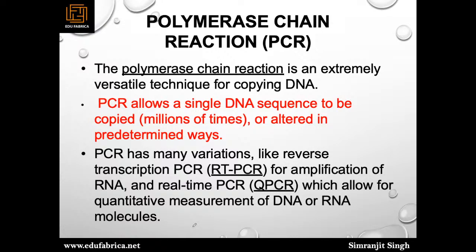Next comes polymerase chain reaction — PCR — which produces millions of copies of one particular DNA template without any alteration. PCR depends on heating and cooling cycles through three steps, abbreviated DAE: Denaturation, Annealing, and Elongation. The cycle runs approximately 35 to 40 times to generate the copies. PCR has many variations including reverse transcription PCR for amplifying RNA, and real-time PCR, which is quantitative PCR allowing quantitative measurement of DNA or RNA molecules.